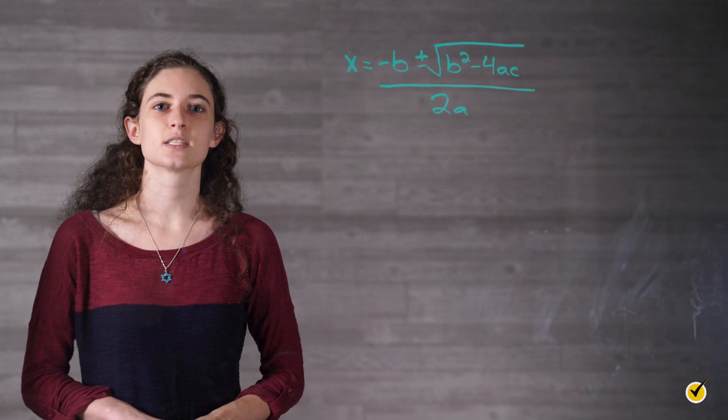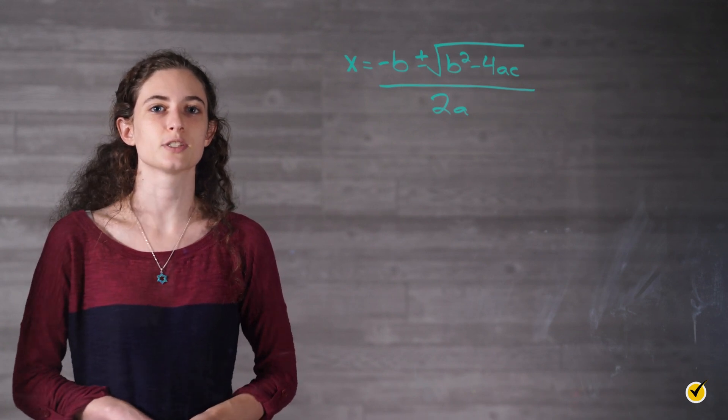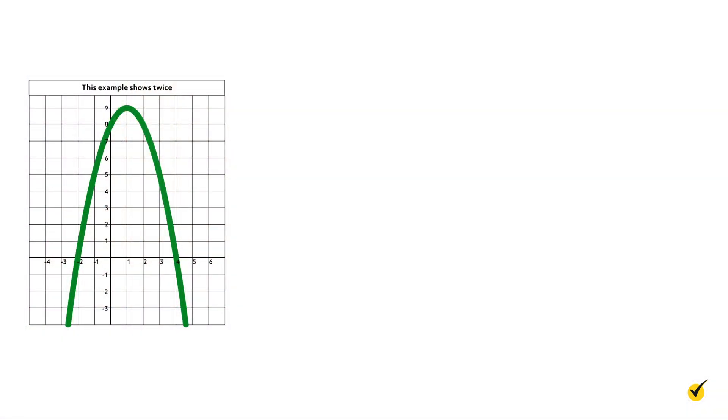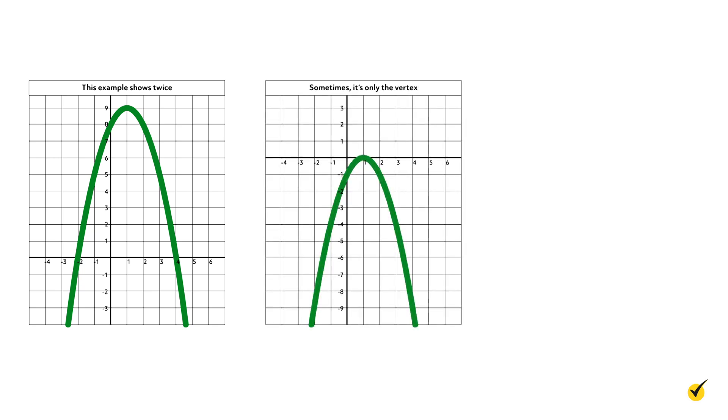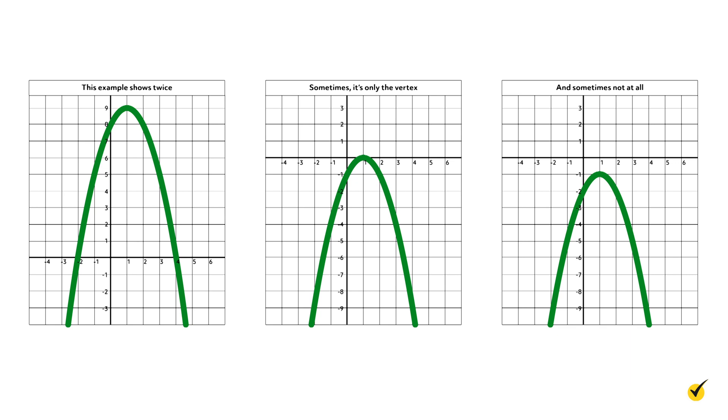Let's take a minute to consider how many times a quadratic function can possibly intersect the x-axis. This example shows twice. Sometimes it's only the vertex, and sometimes not at all. Because of the shape, these are our only choices. In order for a graph like this to intersect the x-axis more than two times, it would need to change direction again and thus no longer be a parabola.